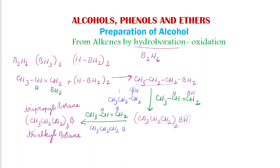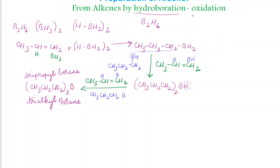Next, this trialkylboron product is oxidized. This is oxidized by hydrogen peroxide. Since there are three alkyl parts, we treat it with three moles of hydrogen peroxide in the presence of aqueous sodium hydroxide. So hydrogen peroxide oxidizes this trialkyl boron in the presence of aqueous sodium hydroxide.